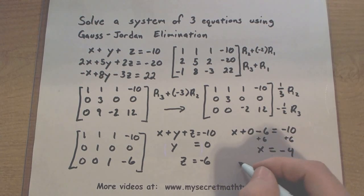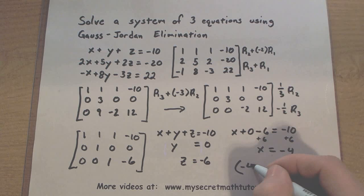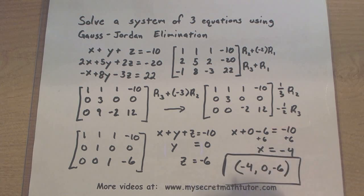Now we have all 3 of our variables. We can package them up into an ordered triple. So negative 4 for x, 0 for y, and negative 6 for z. This will give us a final solution.